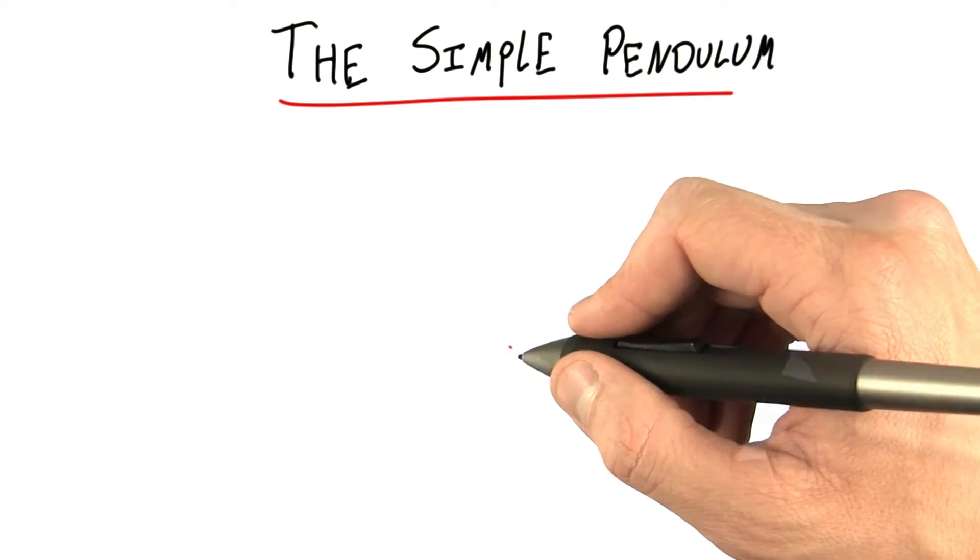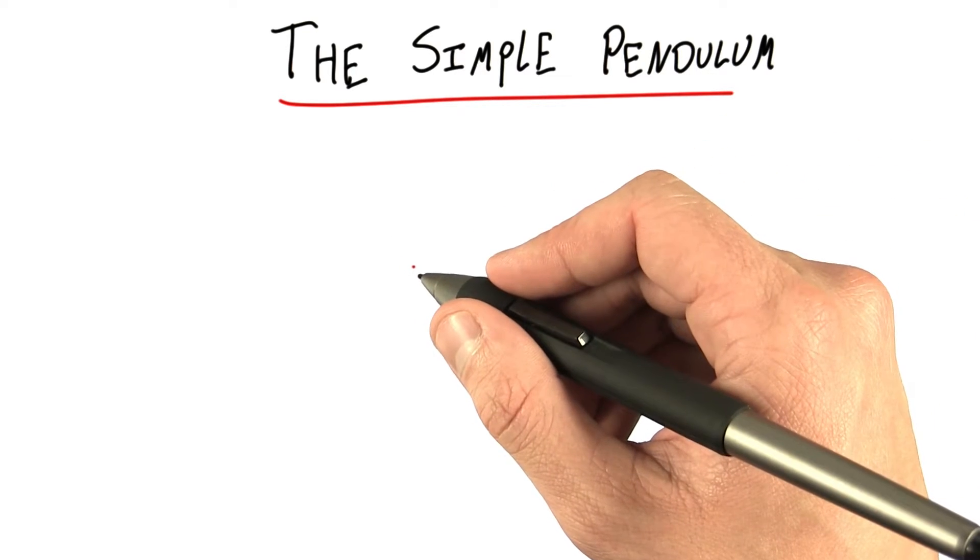Okay, so Huygens wanted to look at a pendulum to measure time. Let's analyze what's going on exactly with a pendulum.